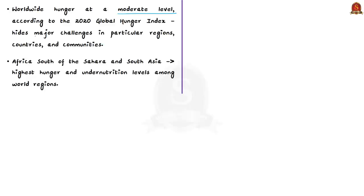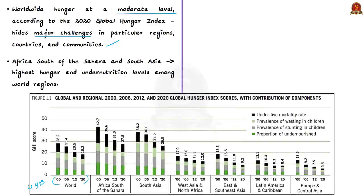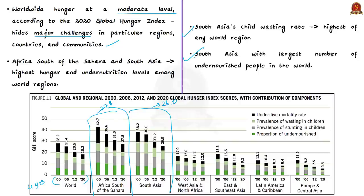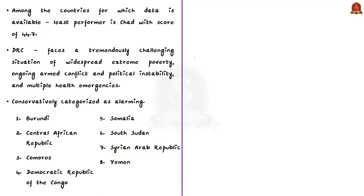This average hides major challenges in particular regions, countries, and communities. Africa south of the Sahara and South Asia have the highest hunger and undernutrition levels among world regions — the 2020 GHI gave them scores of 27.8 and 26 respectively. South Asia's child wasting rate is the highest of any world region, and South Asia has the highest number of undernourished people in the world. For this year's report, there was enough data for only around 107 countries, with several countries like Yemen, South Sudan, Somalia, and the Democratic Republic of Congo lacking sufficient data.